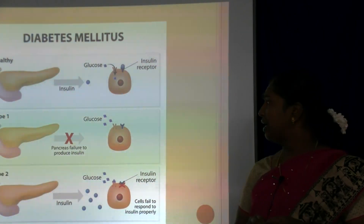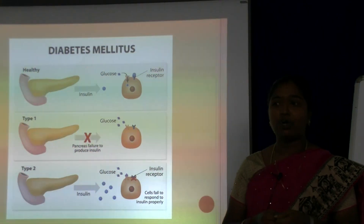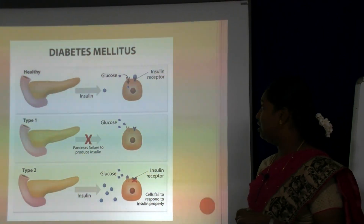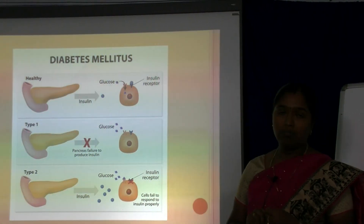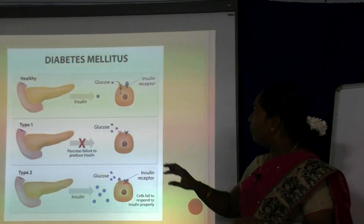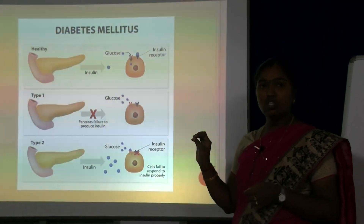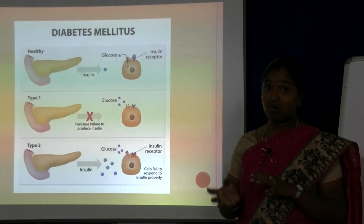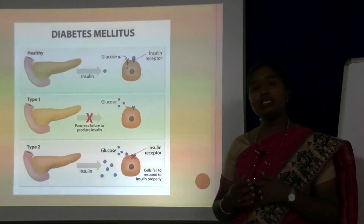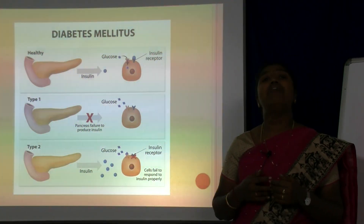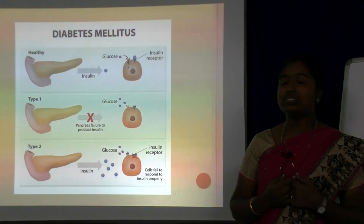In Type 1 diabetes, the pancreas is unable to produce insulin — there is no insulin key molecule. The glucose molecule cannot enter the cell and remains in the bloodstream. As a result, blood circulation will have a high rise in glucose level.